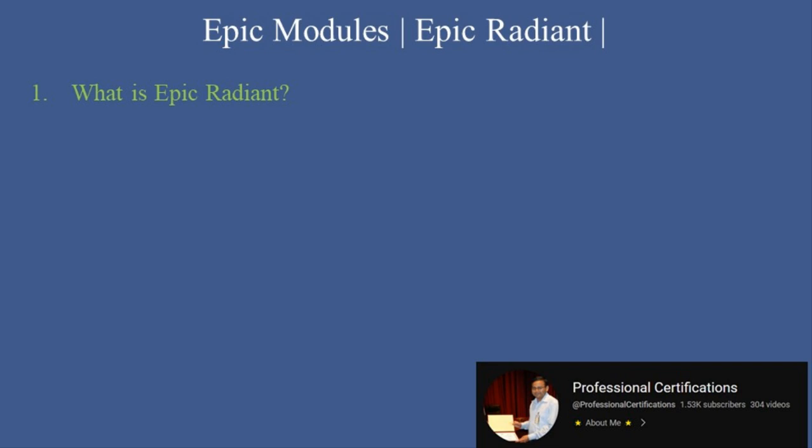What is EPIC Radiant? EPIC Radiant is EPIC's radiology information system (RIS) that integrates imaging workflows directly into the EPIC ecosystem. It supports every step of the radiology process, from ordering and scheduling to image interpretation and reporting.